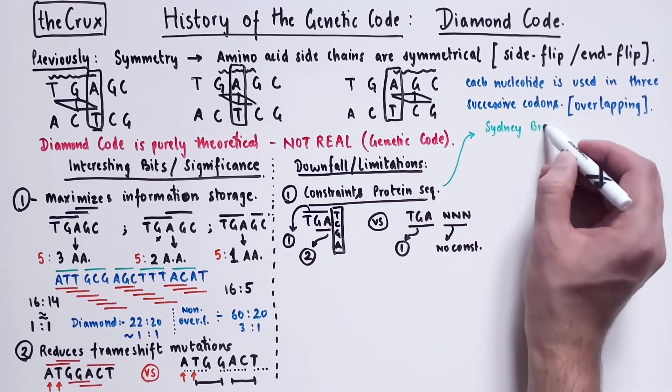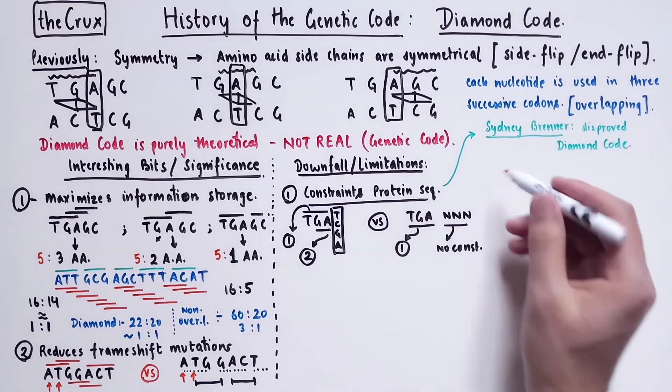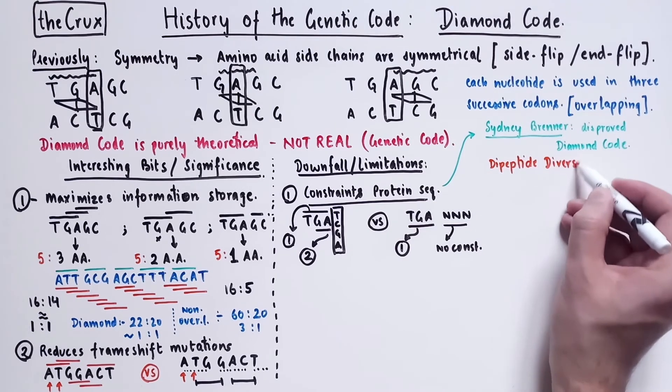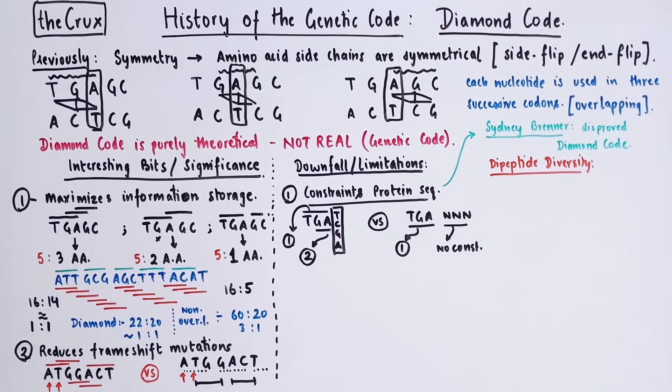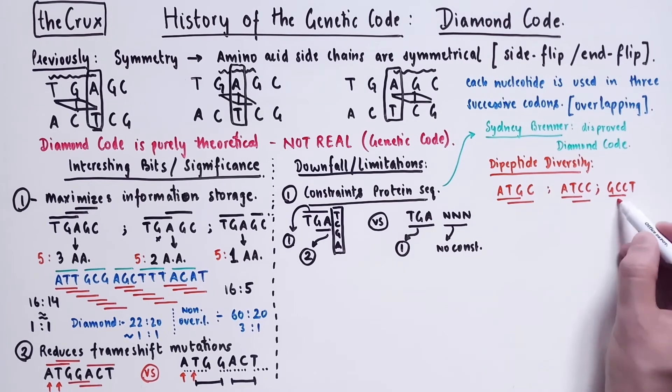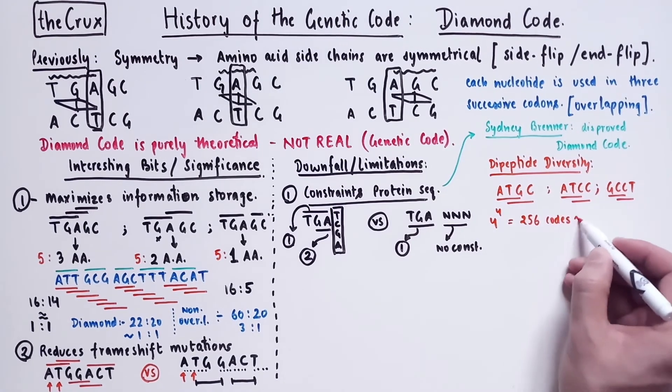This was argued and shown by the great Sidney Brenner in his paper that basically disproved the diamond code. He explained this concept of constraint by using the example of dipeptide diversity. Dipeptide is just another way of saying that there are only two amino acids in a chain. So the calculations were straightforward. Under the diamond code, you would need four bases to code for a dipeptide. So for instance, in these examples, you have four bases that have two codons and that code for two amino acids. And because there are four possible bases, A, T, G, and C, and you also need four bases to code for dipeptides, there will be in total 256 dipeptides possible under the diamond code.